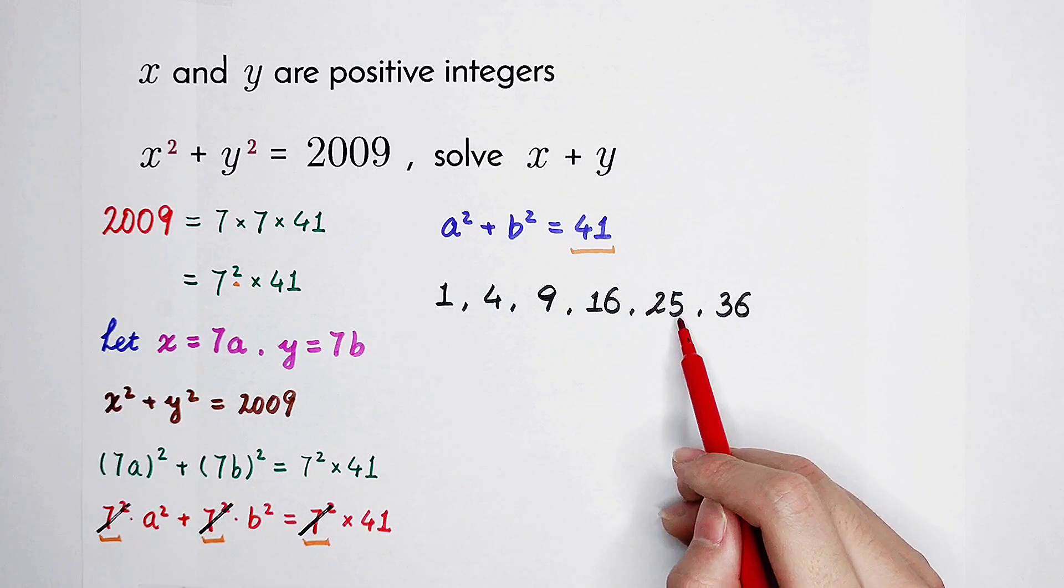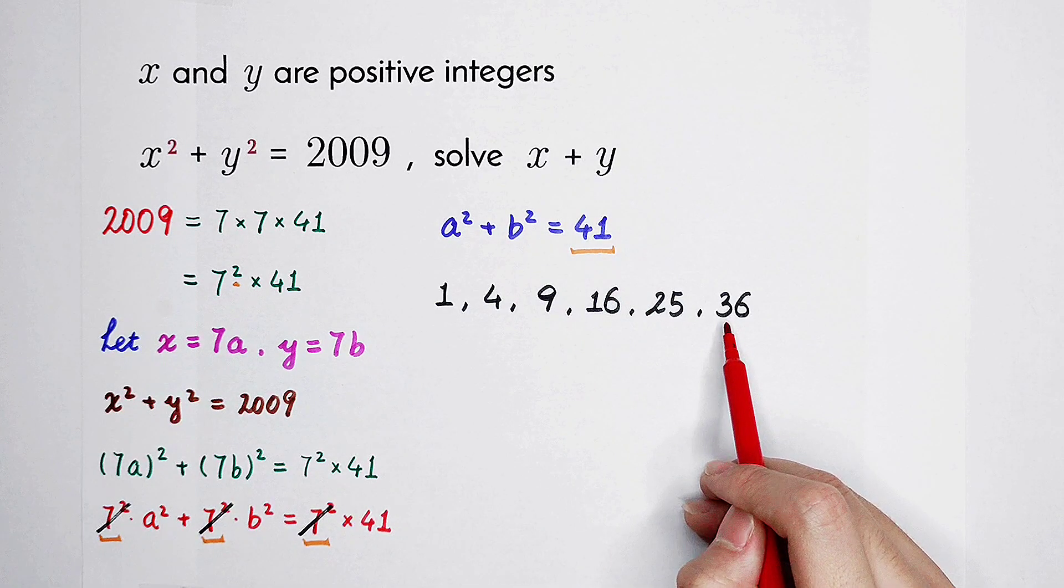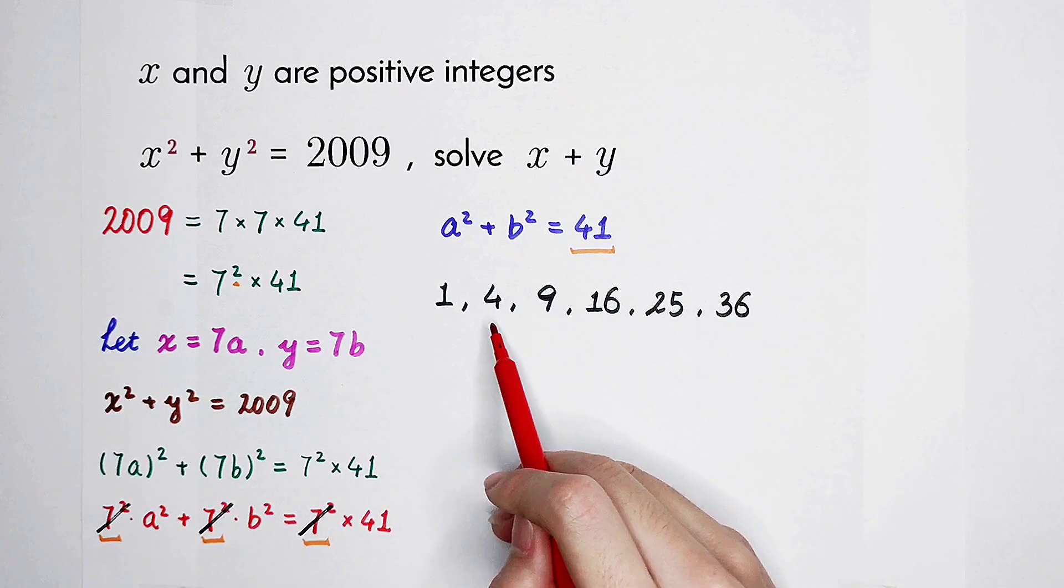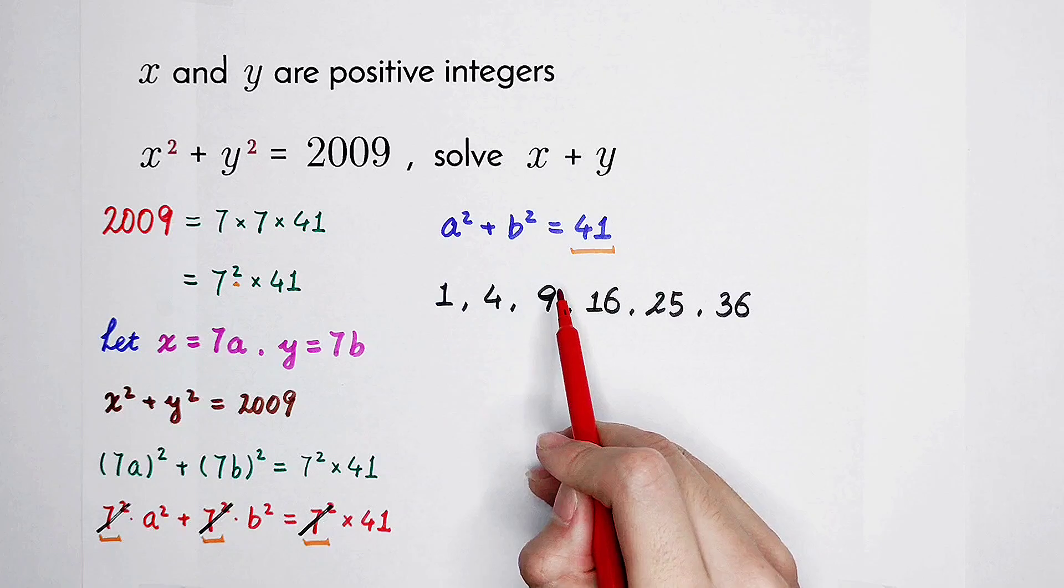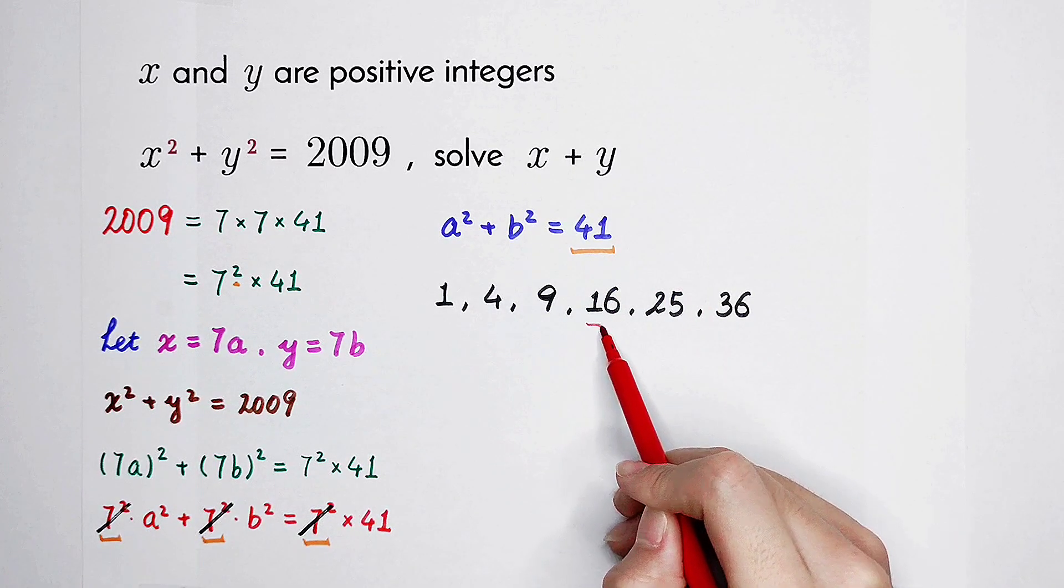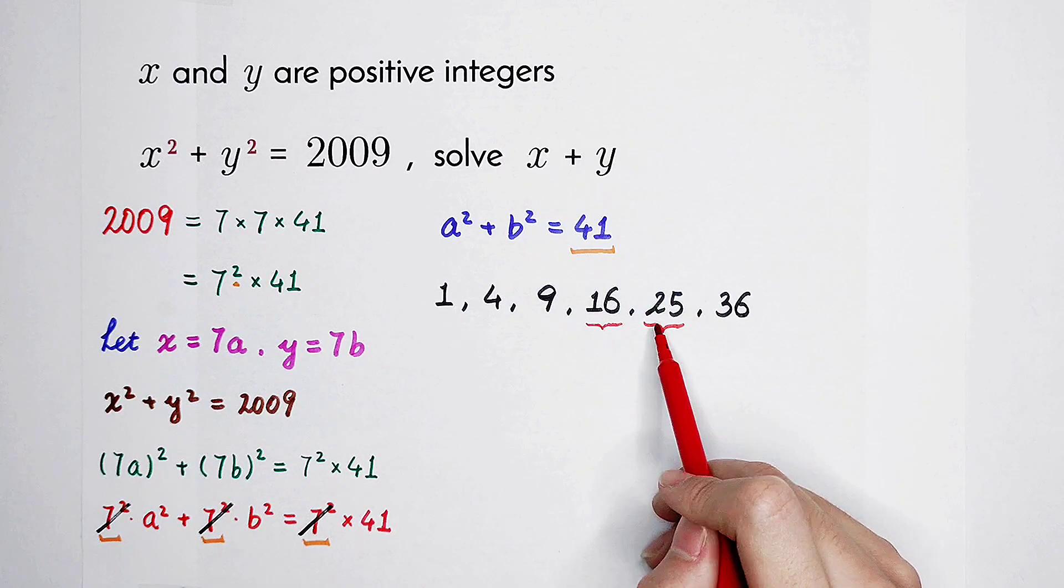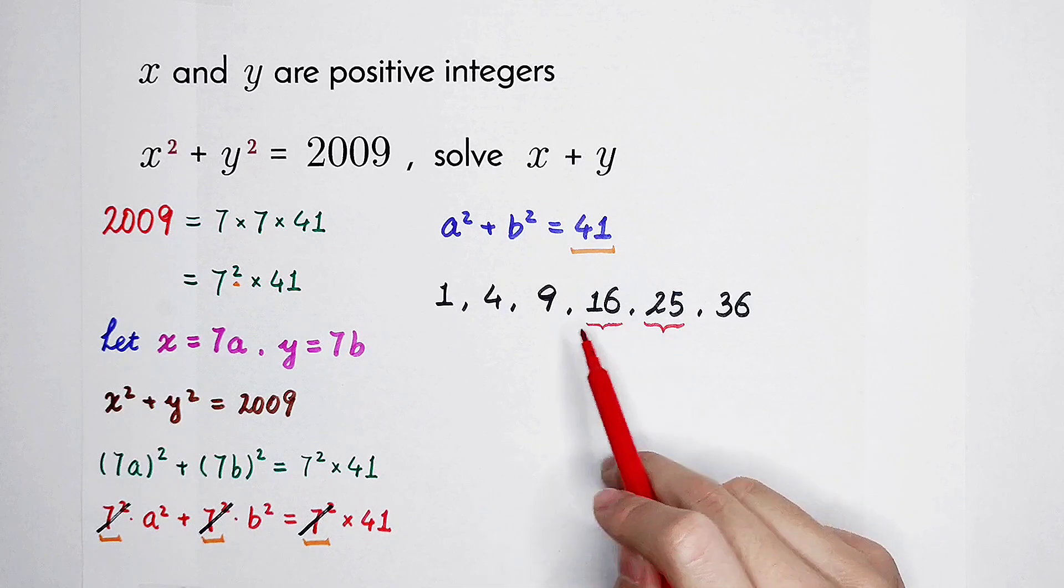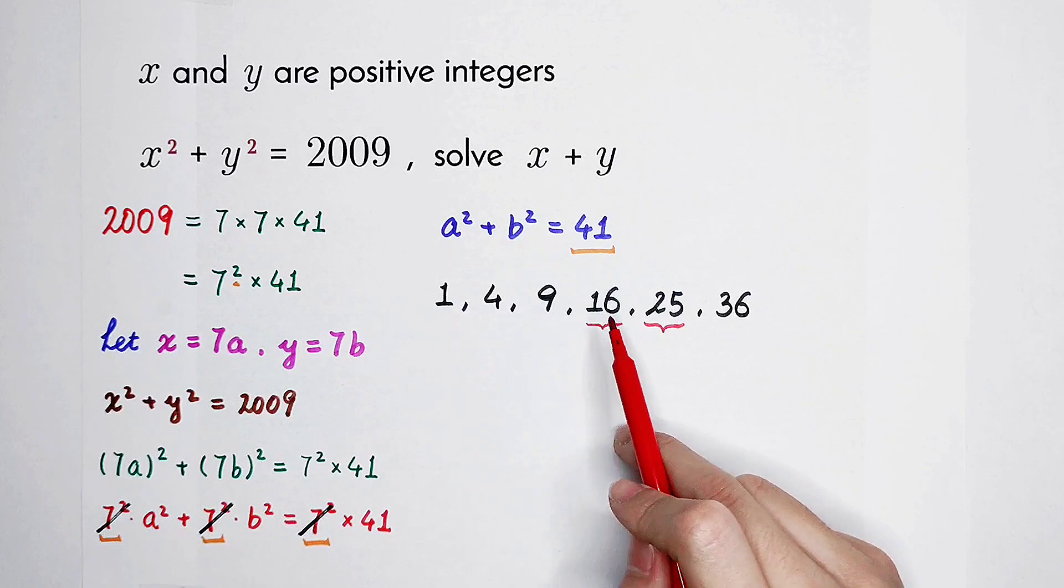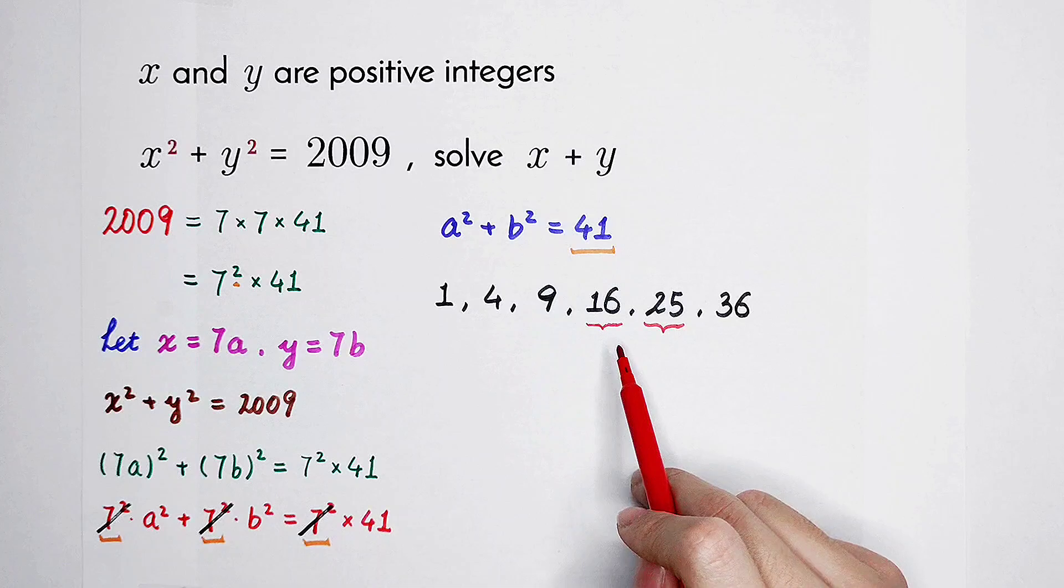36 plus 25 is bigger than 41. 36 plus 16 is bigger than 41. 36 plus 4 is less than 41. 25 plus 16, you can find that their sum is 41. And if you add 25 to 9, it will be less than 41. 16 plus 9 is also less than 41. So only 16 and 25 are possible.